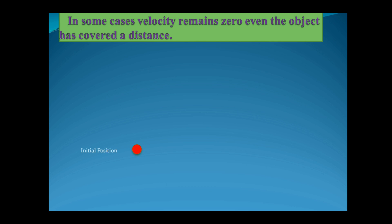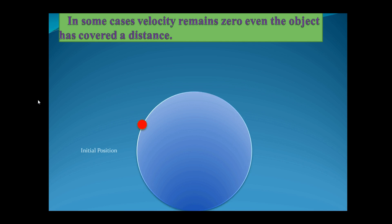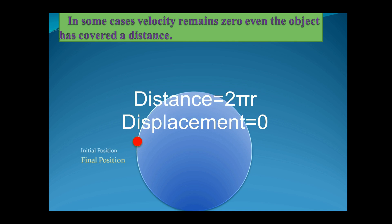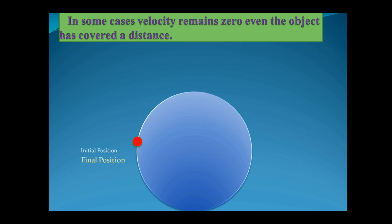In some cases, the velocity remains 0 even though the object has covered a distance. Here I am showing a ball covering a circular path. The ball has covered a distance of 2πr — the perimeter of the circle — but the displacement is 0. Since velocity is the rate of change of displacement and not distance, the velocity of the ball is 0, even though the ball has speed.